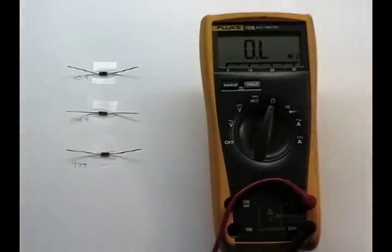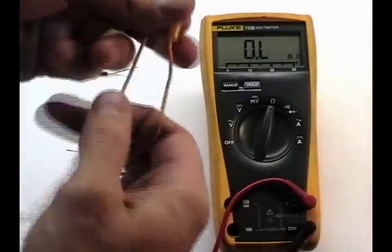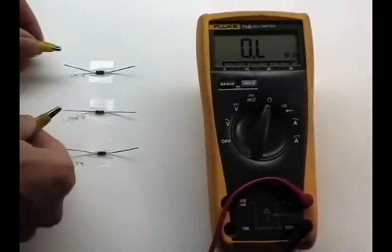Using alligator test leads, we will create a parallel circuit by connecting each lead of the first and third resistors.